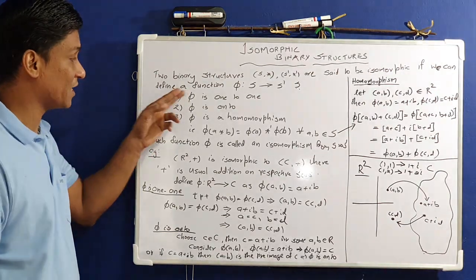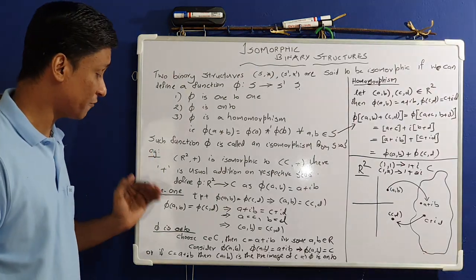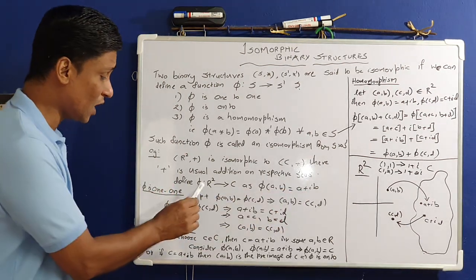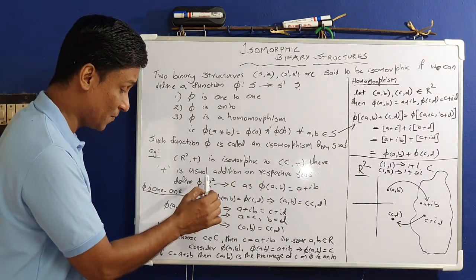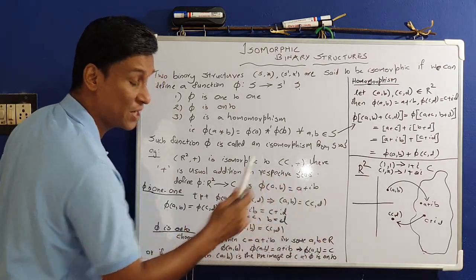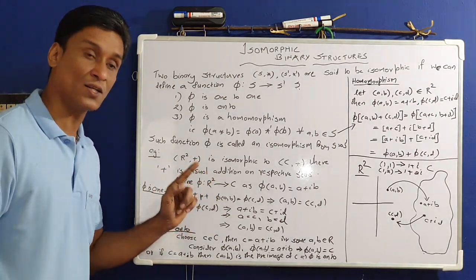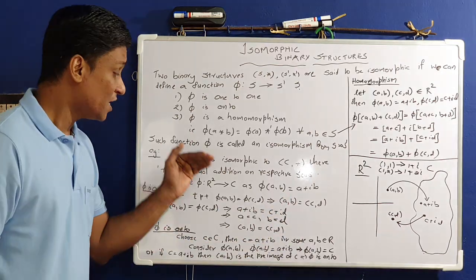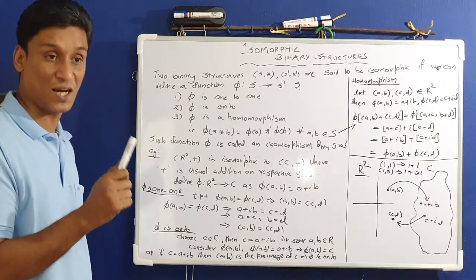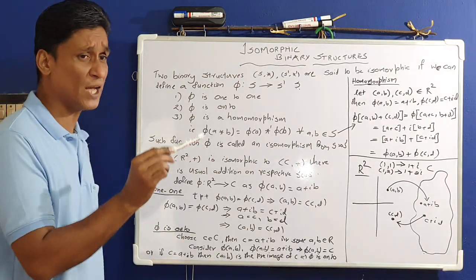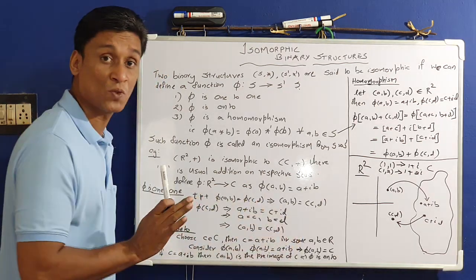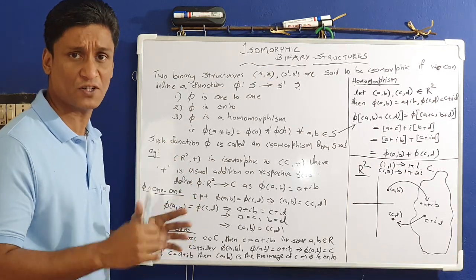I am going to define φ from R² to C as φ(a, b) = a + ib. It is a simple definition — the point (a, b) in R² maps to the complex number a + ib. This is our mapping φ from R² to C, defined as φ(a, b) = a + ib. Now, the first property is the one-to-one property. To prove one-to-one, we have to prove that f(x) = f(y) implies x = y.